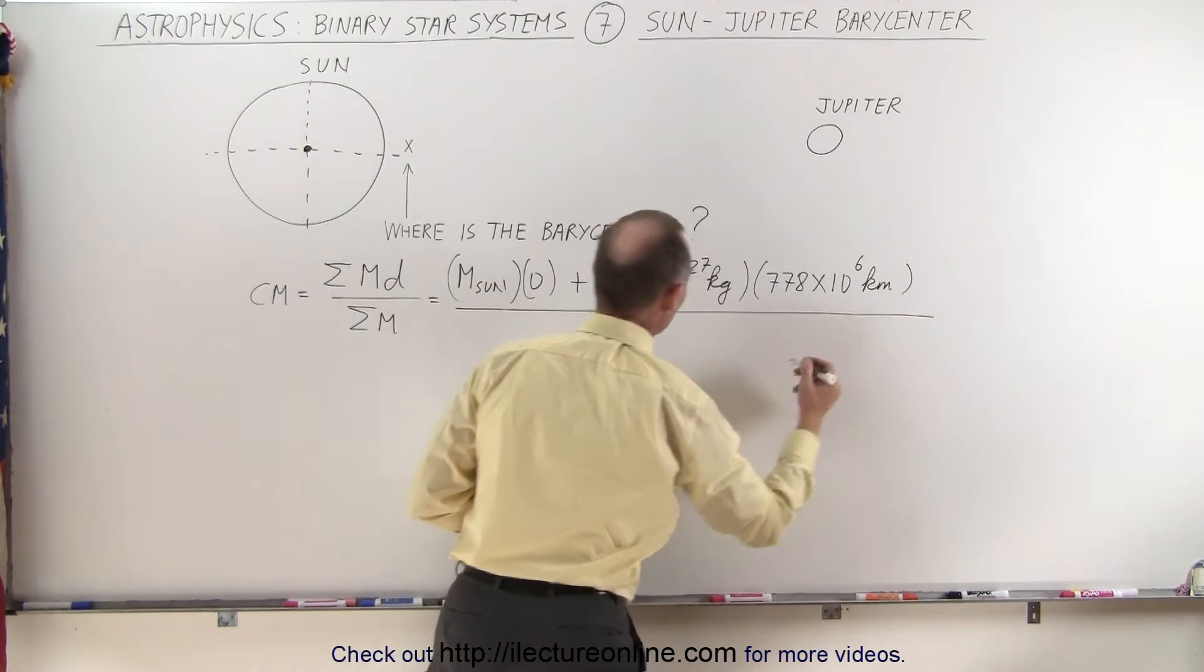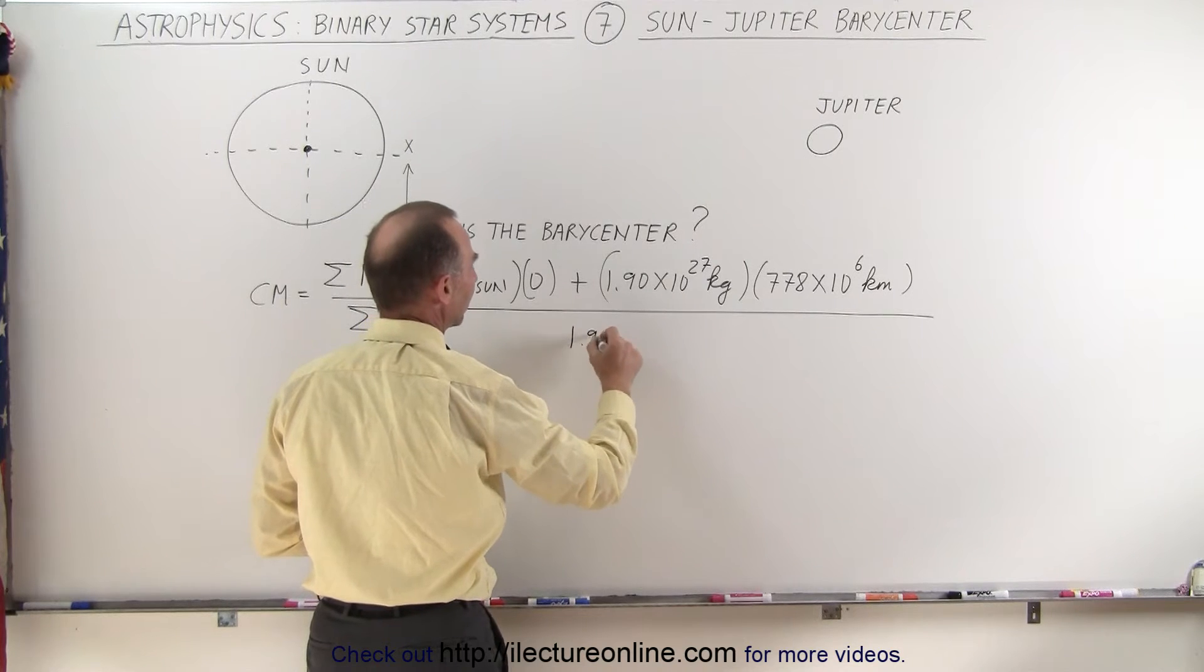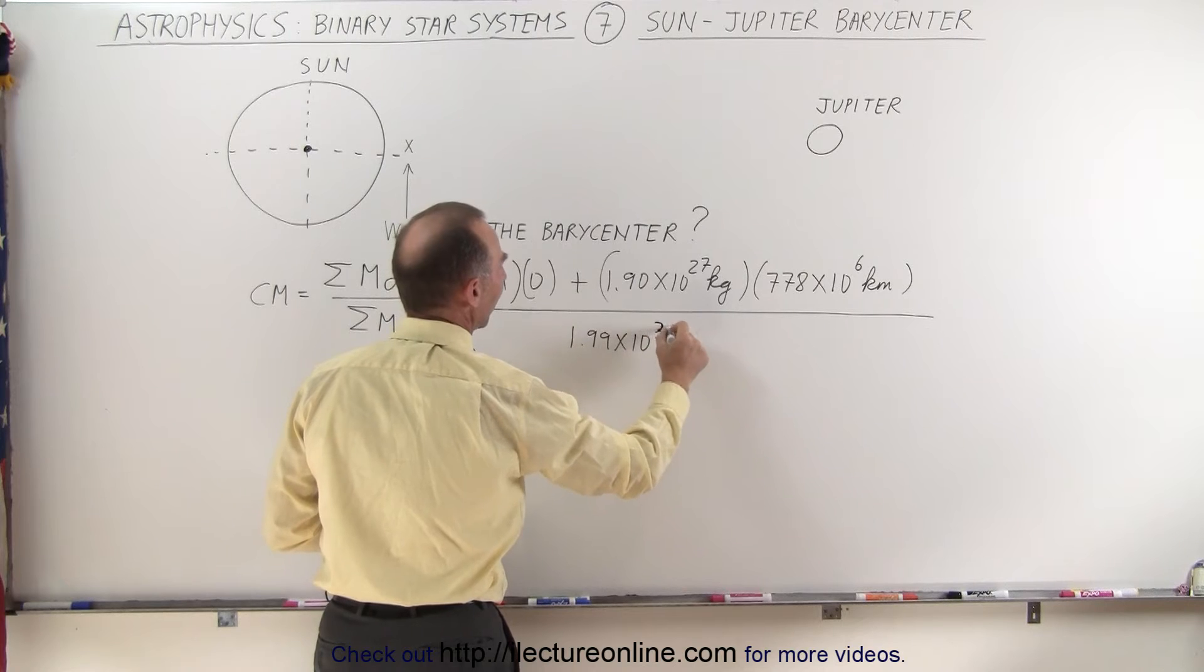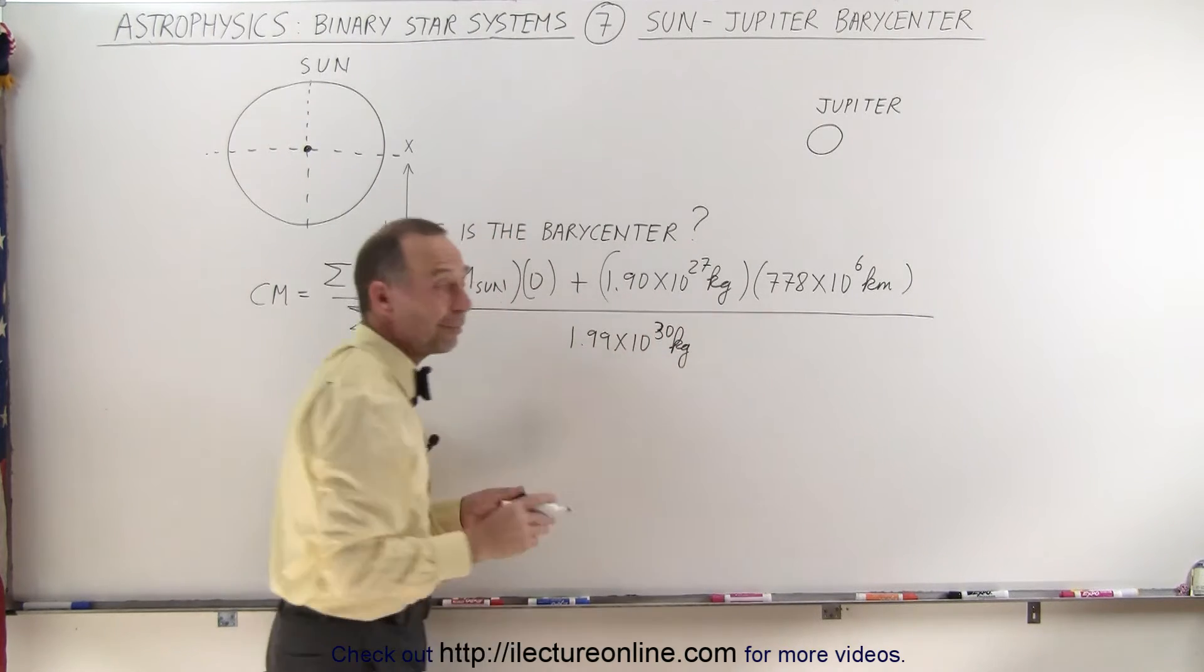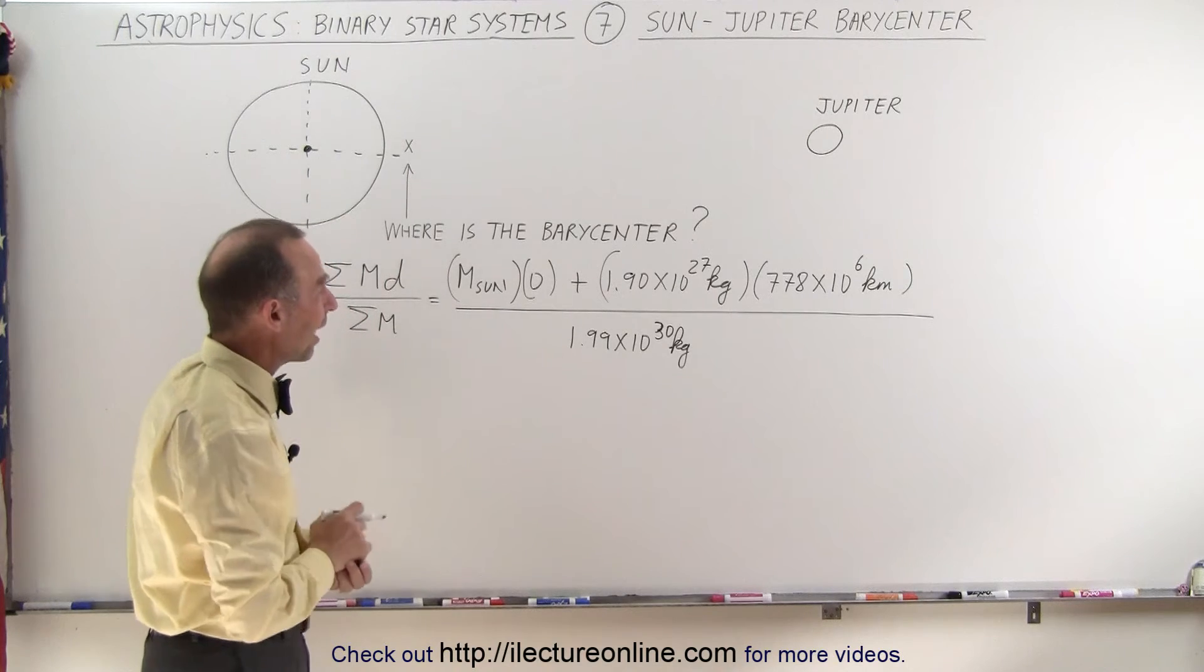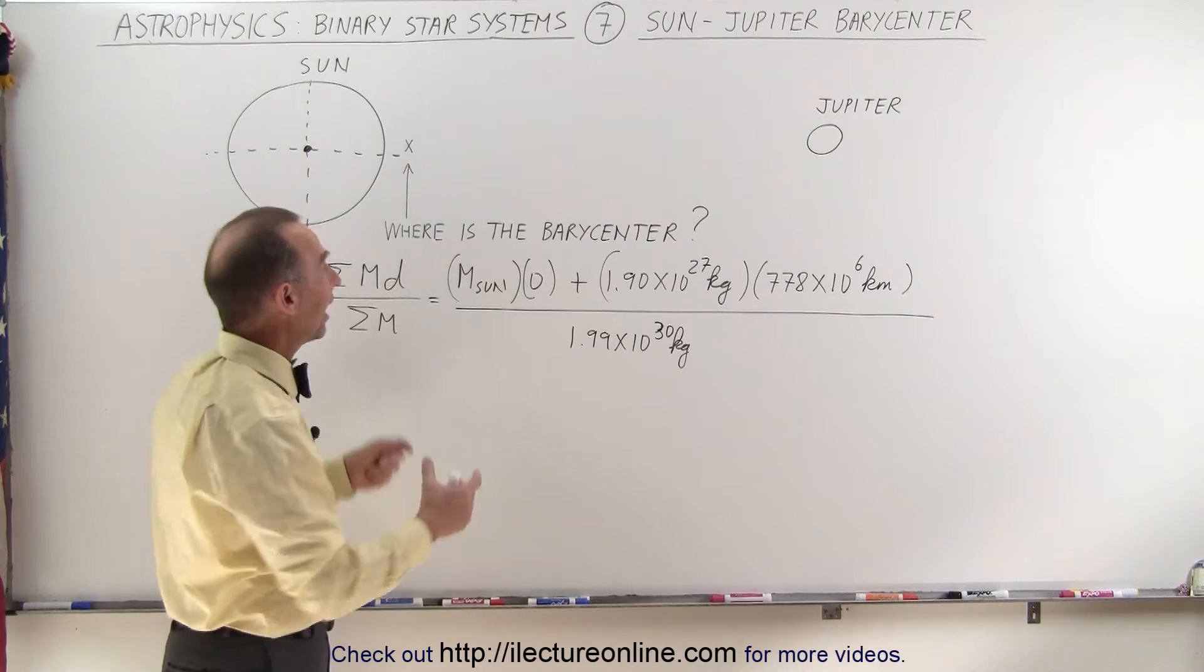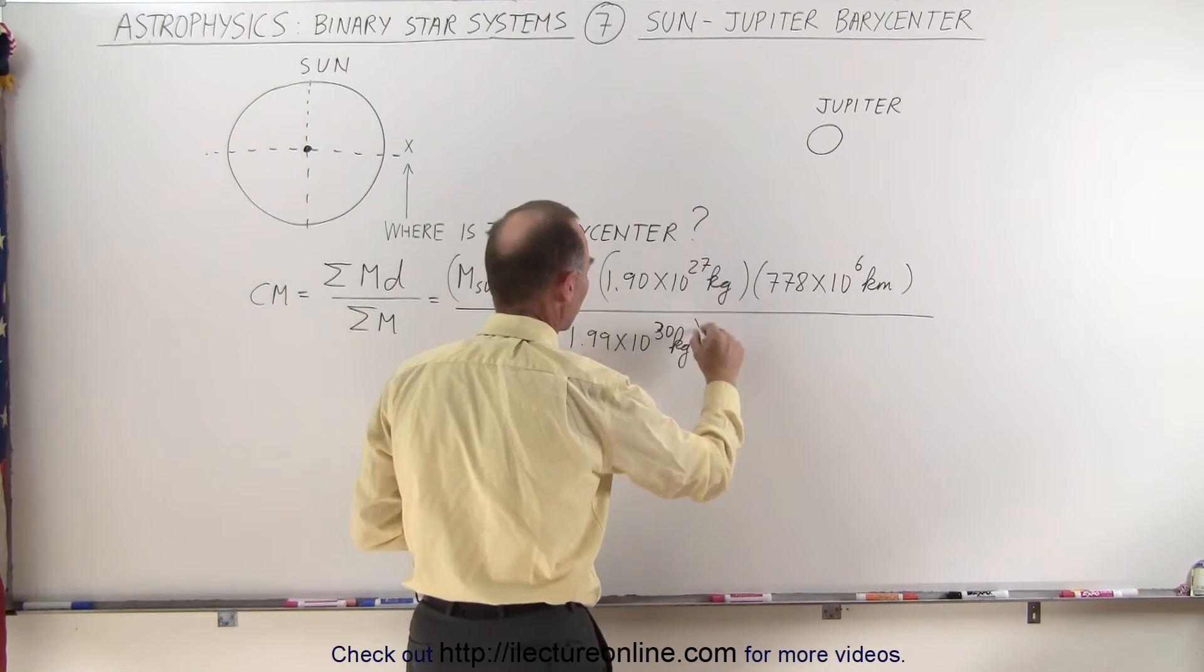We divide the whole thing by the sum of the two masses. The Sun's mass is 1.99 times 10 to the 30th kilograms. If you compare the mass of the Sun to the mass of Jupiter, the mass of the Sun is roughly a thousand times the mass of Jupiter. That's because they have about equal densities, and the volume of the Sun is roughly a thousand Jupiters.